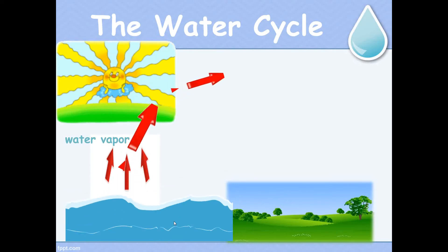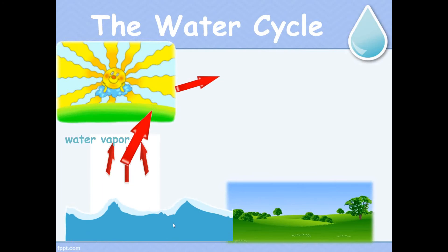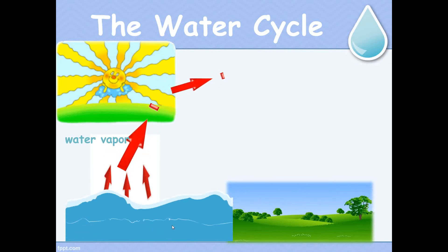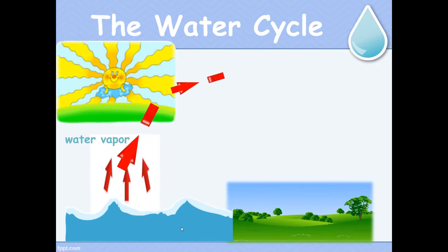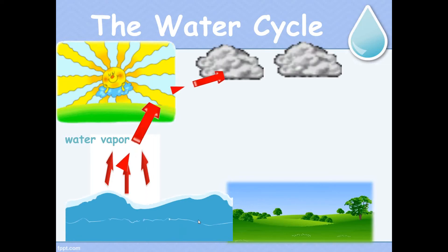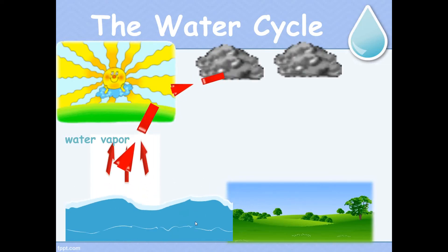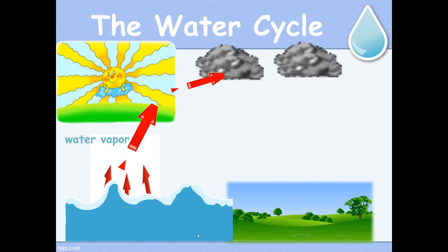Water vapor is warm, but as it gets high in the air, it cools a little bit and turns back into drops of water, forming clouds. So clouds form of drops of water.